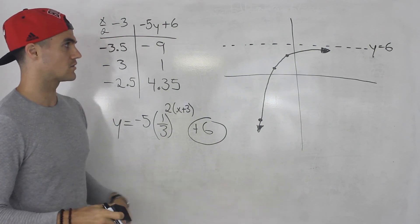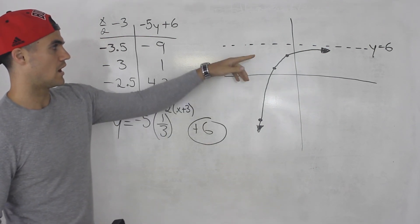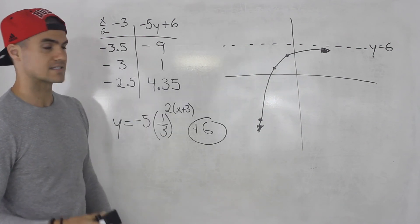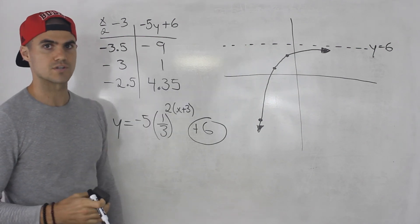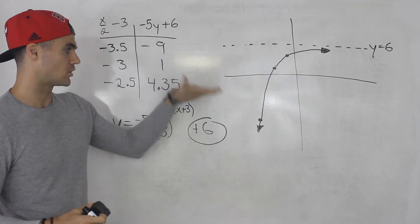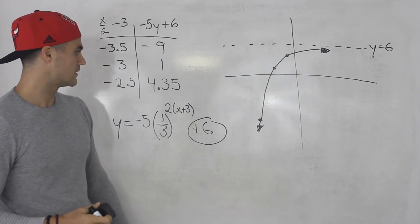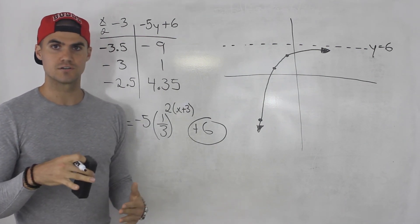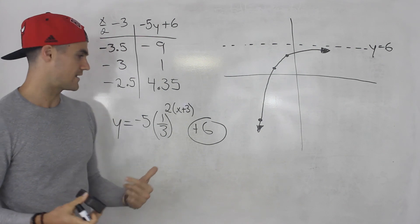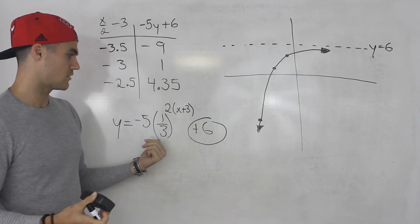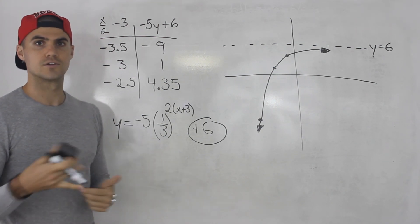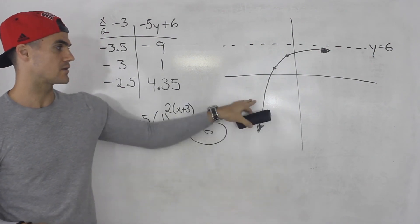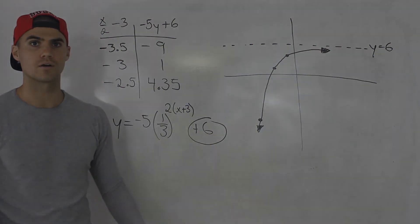For domain and range: the domain of an exponential function is always all real numbers (x ∈ ℝ). The range is y < 6, since all points fall below the horizontal asymptote. Sometimes you need to rearrange a function into a familiar format, apply the transformations, and then graph it.